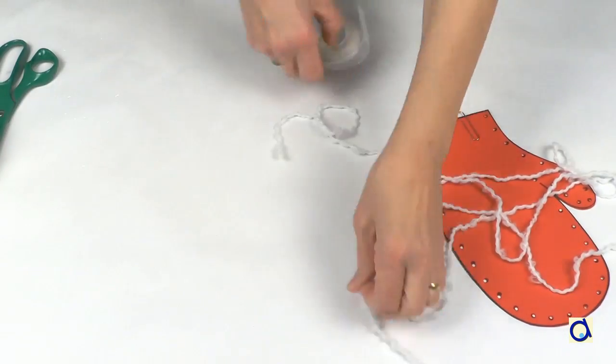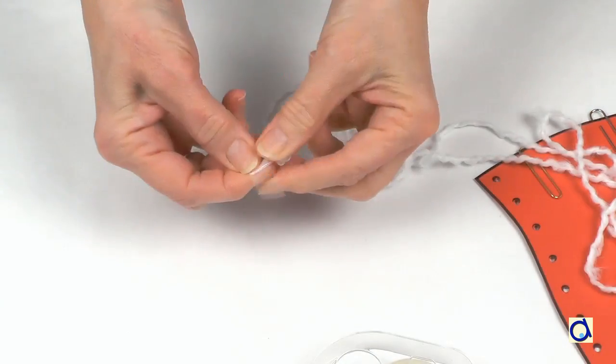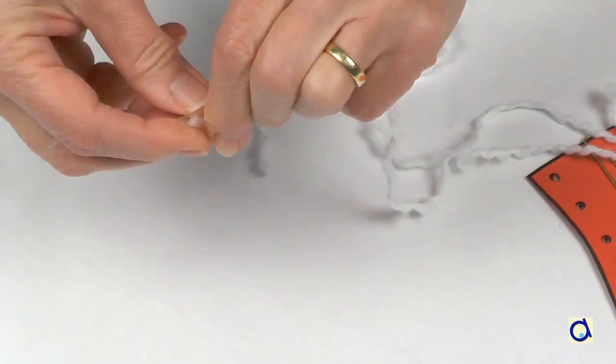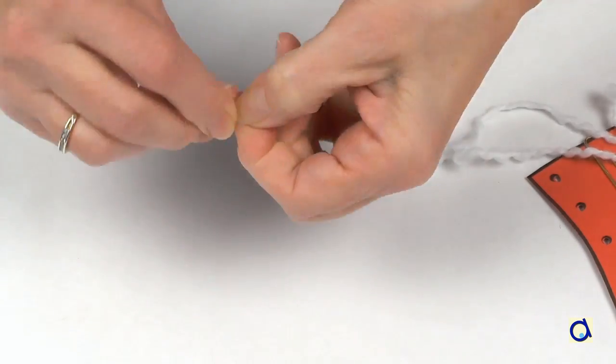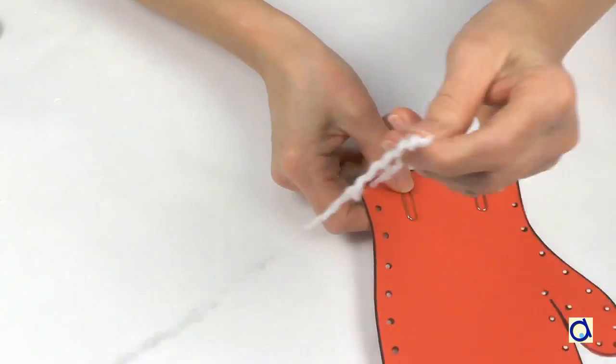Cut a piece of knitting yarn or twine about 3 feet or 1 meter long. Wrap scotch tape around one end of the yarn. When the end is wrapped in scotch tape, it becomes very easy to pass the yarn through the holes.